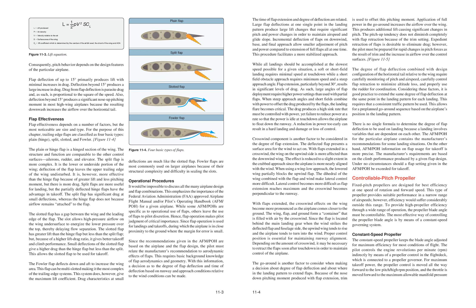Pitch behavior depends on the design features of the particular airplane. Flap deflection of up to 15 degrees primarily produces lift with minimal increases in drag. Deflection beyond 15 degrees produces a large increase in drag. Drag from flap deflection is parasite drag and, as such, is proportional to the square of the speed. Also, deflection beyond 15 degrees produces a significant nose-up pitching moment in most high-wing airplanes because the resulting downwash increases the airflow over the horizontal tail.